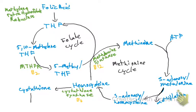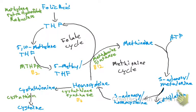S-adenosylmethionine then needs to be converted to cysteine. The enzyme required for this conversion also requires vitamin B6 to carry out the reaction.